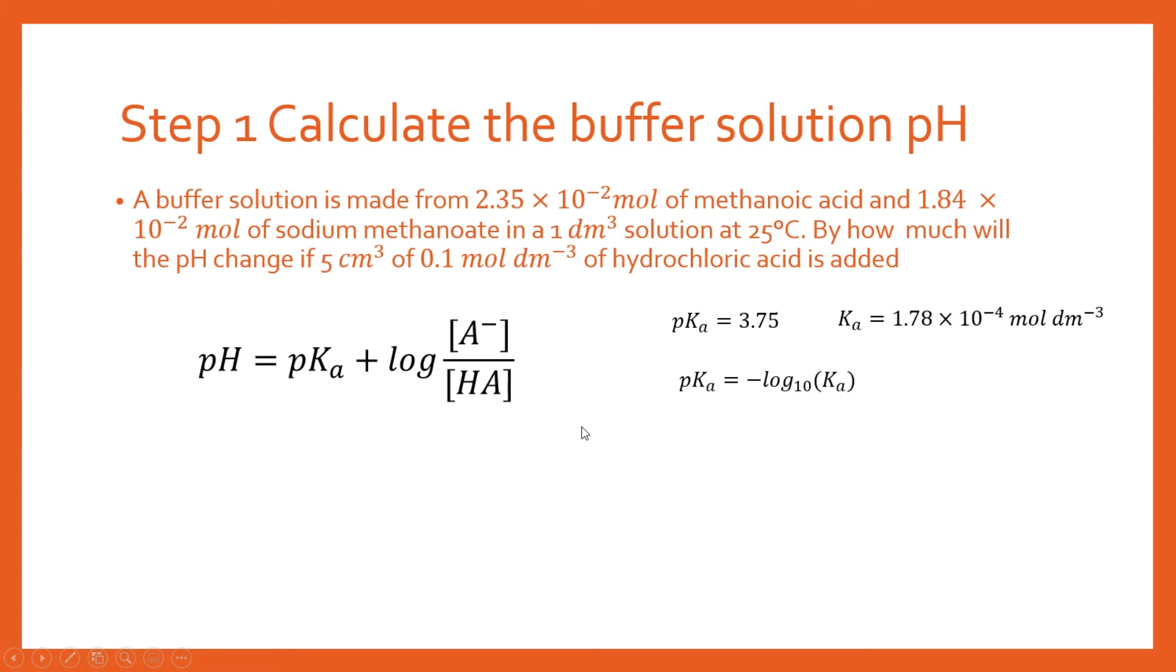So all we need to do is substitute the values that we're told. We've got 3.75 for the pKa. We know that this is the concentration of our weak acid. We know it's a concentration because we've got a 1 dm³ solution. So you're basically doing this many moles divided by 1 to get moles per dm³, and so that number is not going to change. Normally you would have to actually do the calculation to find the concentration from your volume and your number of moles. But this case it's a little bit simpler because we've got exactly 1 dm³.